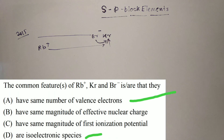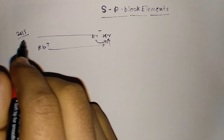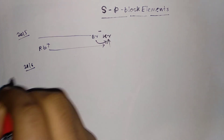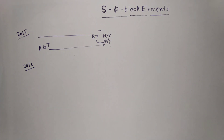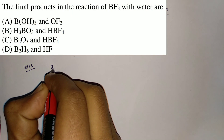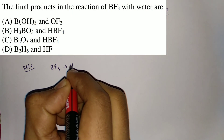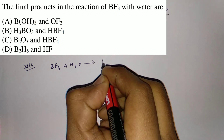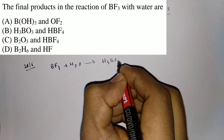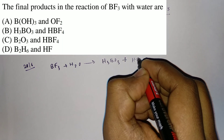Now coming to JAM 2016. There was only one question from JAM 2015. The first question from JAM 2016 was the final products of the reaction BF3 plus H2O. The final products are H3BO3 and HBF4.